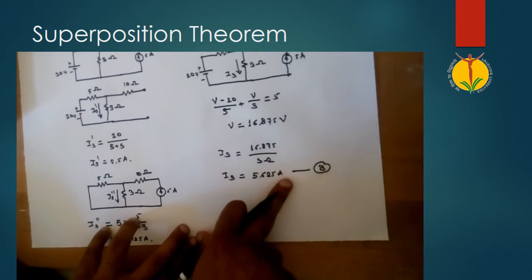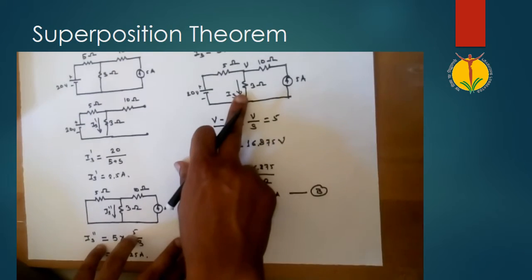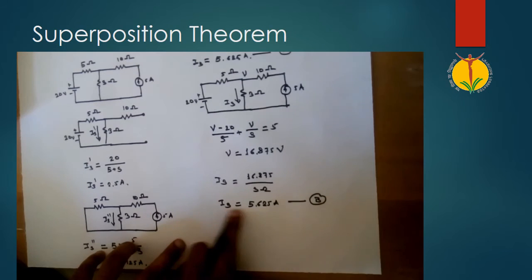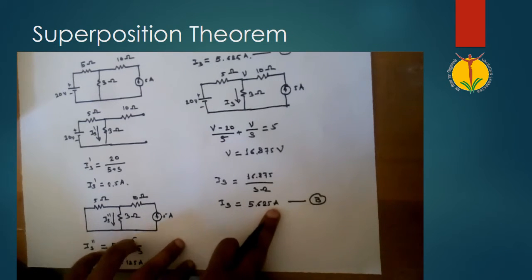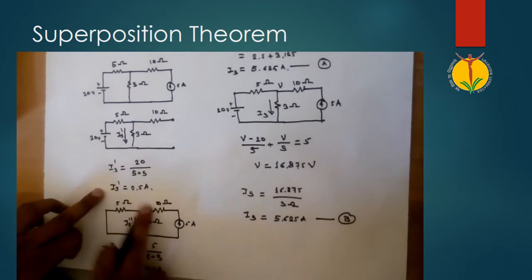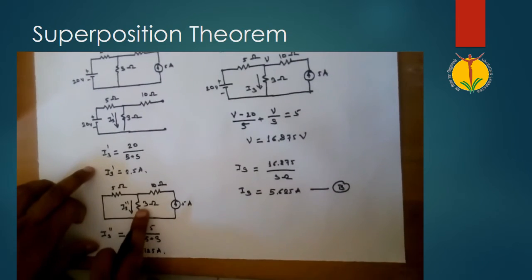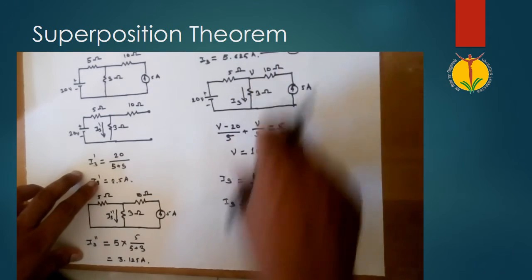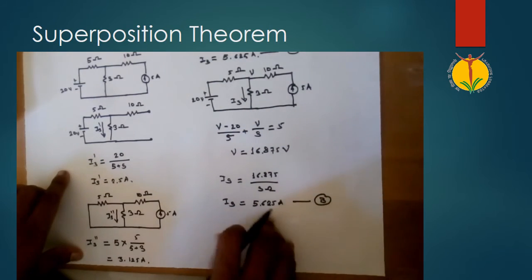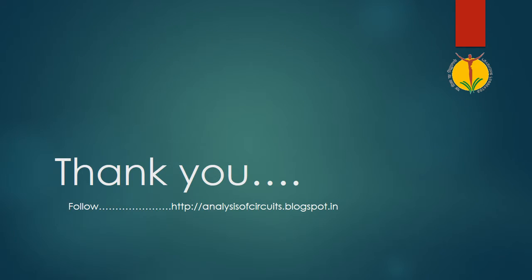We have calculated that the current flowing through the 3 ohm resistor due to the 20 volt source and the 5 ampere source is 5.625 amperes, which is nothing but the algebraic sum of the currents due to each individual source. So A equals B, which confirms the superposition theorem. Thank you very much for watching this video. For more examples and theory, follow my blog at analysisofcircuits.blogspot.in.